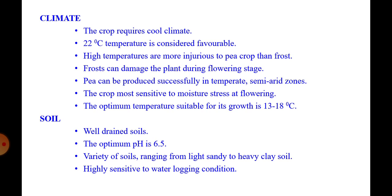Climate: this crop requires cool climate. Moderate temperatures are essential throughout the growing season. For germination, 22 degrees centigrade is considered the most favorable temperature. High temperatures are more injurious to pea crop than frost. Frost can damage the plant during flowering stage. Pea can be produced successfully in temperate and semi-arid zones. The crop is most sensitive to moisture stress at flowering. High humidity is harmful to pea crop as it favors the incidence of diseases. The optimum temperature for its growth is 13 to 18 degrees centigrade.